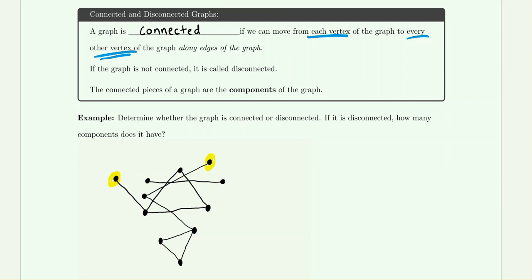Now let's consider: could we get from this vertex to this vertex? Take a minute to look at the graph and think about that. If we try, we might first come through this vertex and then here, but there's no edge that connects these two. Maybe we come down, but at this point we've gotten back in a circuit and would just keep repeating the same path. This graph is disconnected — there is no path of edges that would take us from this vertex to this vertex.